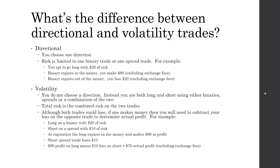What is the difference between directional and volatility-based trades? A directional trade means you choose a direction based on your technical analysis, and your risk is limited to one binary or spread trade. For example, if you opted to go long with $20 of risk, and the binary expires in the money, you would make $80 excluding exchange fees. If it expired out of the money, you would lose the $20. A binary pays out a maximum of $100, so your profit potential is $80.